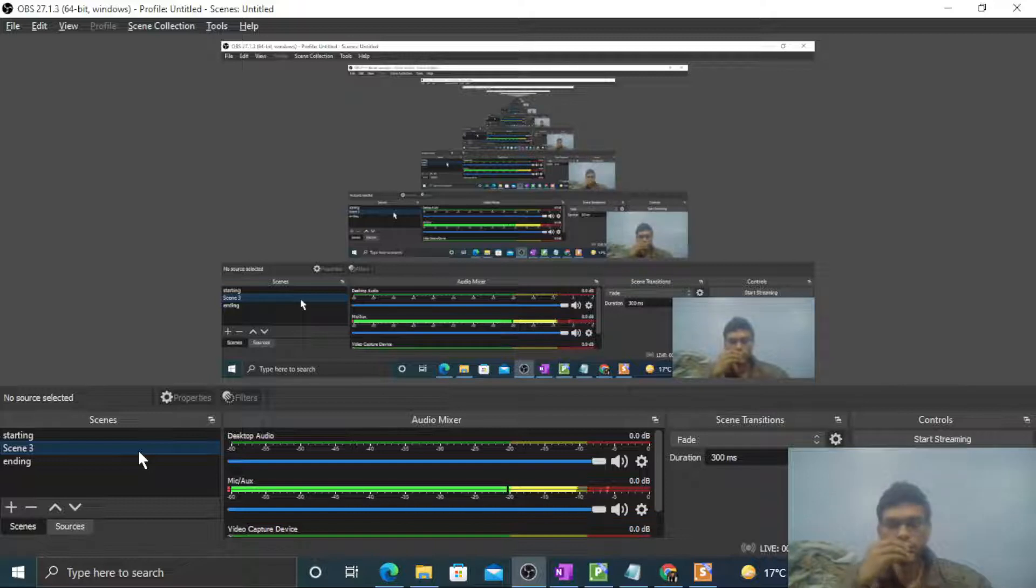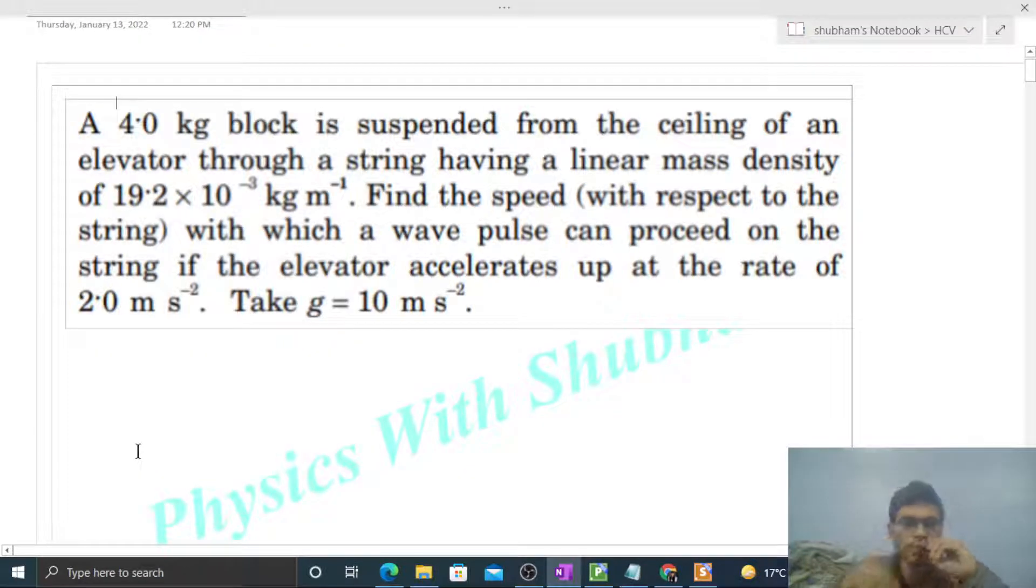Hi everyone, today let's discuss an interesting problem. A four kilogram block is suspended from the ceiling of an elevator through a string having a linear mass density of 19.2×10⁻³ kg/m³. Find the speed with respect to the string with which a wave pulse can proceed on the string if the elevator accelerates up at the rate of 2.0 m/s². Take g = 10 m/s².